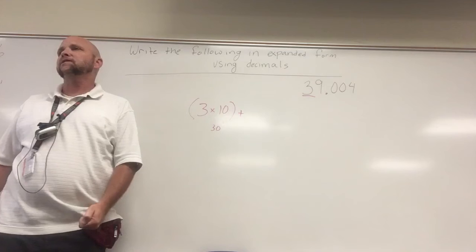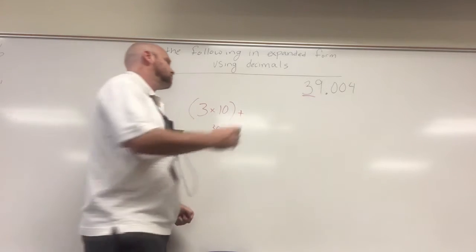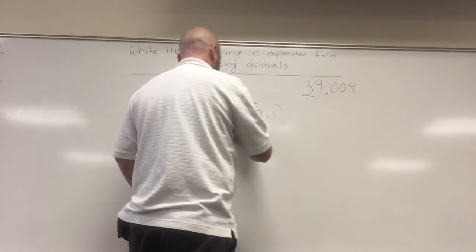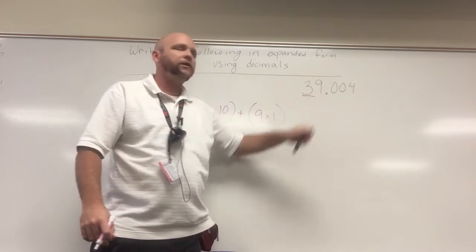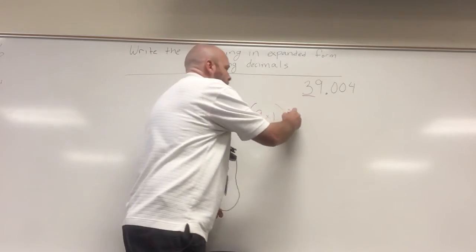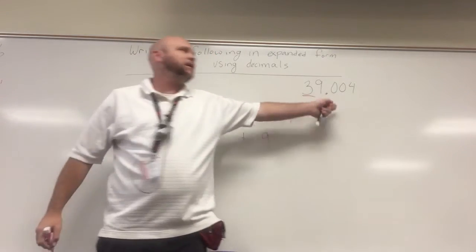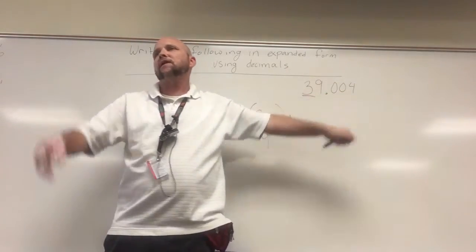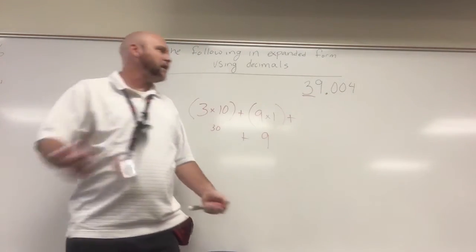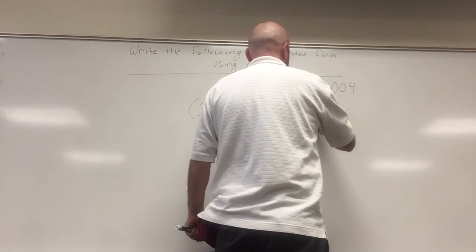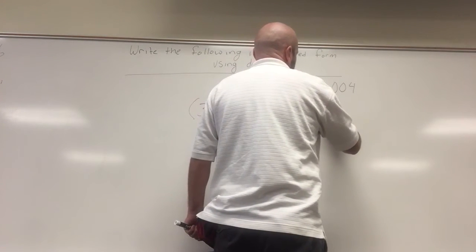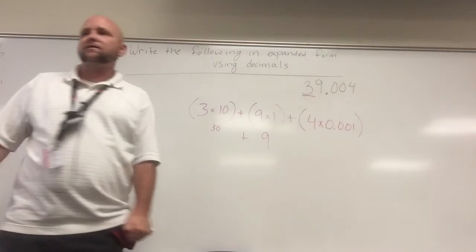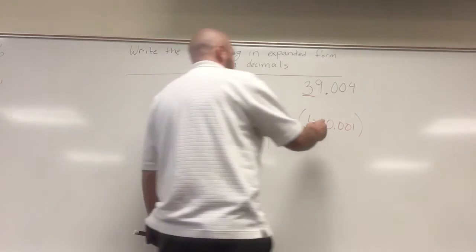Plus the nine is in what place value? The ones. The ones. So I have nine times one, which gives me nine. So again, thirty plus nine is my thirty-nine. Plus, I don't have any tenths. I don't have any hundredths. The four is in what place value? The thousandths. So I have four times one thousandth, which equals four thousandths.